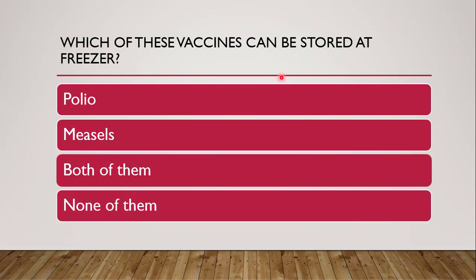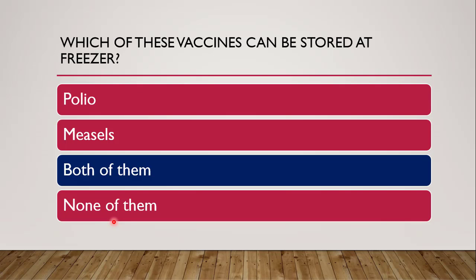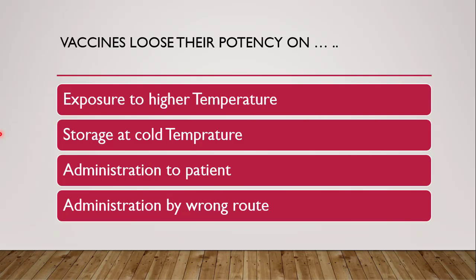Next question: which of these vaccines can be stored at freezer — polio, measles, both of them, or none of them? As discussed, the answer is both of them, because polio and measles are the vaccines which can be stored at freezer. Next question: vaccines lose their potency on what — exposure to higher temperature, storage at cold temperature, administration to patient, or administration by wrong route? The correct answer is exposure to higher temperature, because storage at cold temperature is desired for vaccines, and vaccines lose their potency only when exposed to higher temperature.